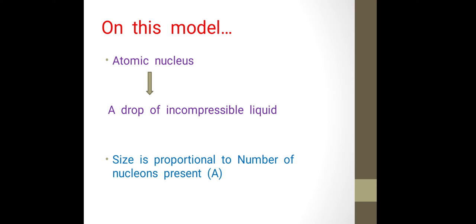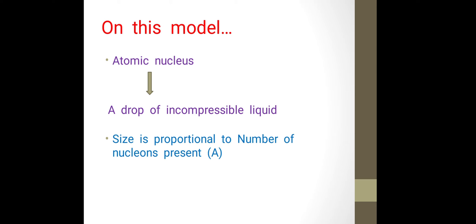Also, they have considered the size of atomic nucleus is proportional to number of nucleons present. Nucleons means protons plus neutrons. If number of nucleons are more in number, then size is larger, and if number of nucleons are less in number, then size is smaller.